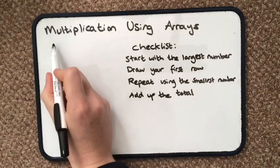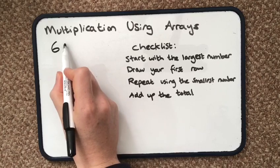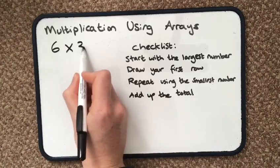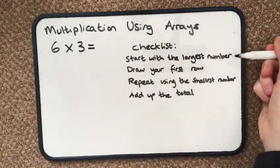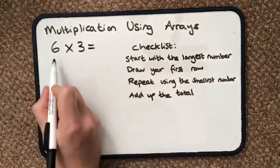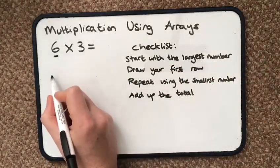So if you have a number like 6 multiplied by 3, it says start with the largest number, so that's going to be 6, and draw your first row.